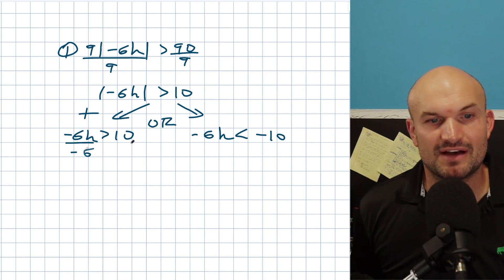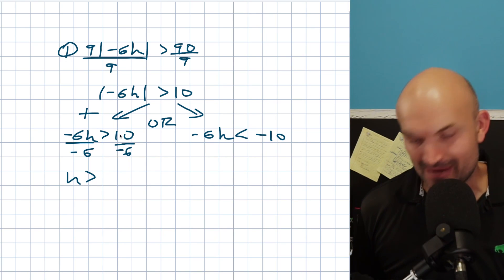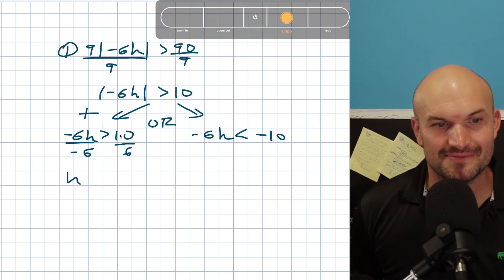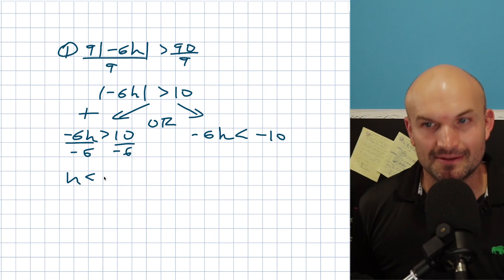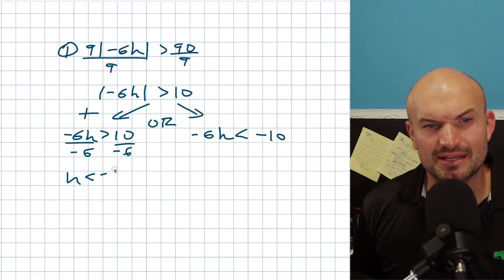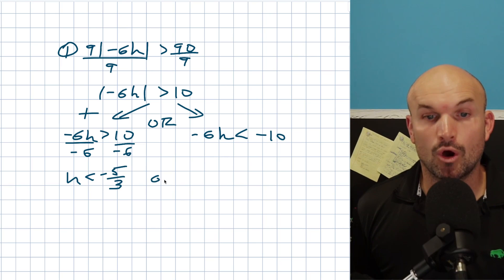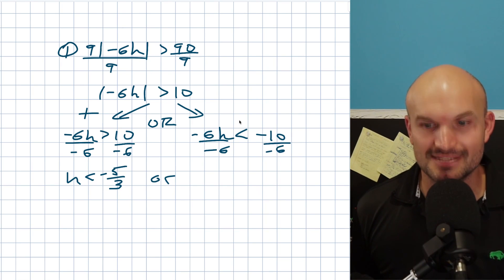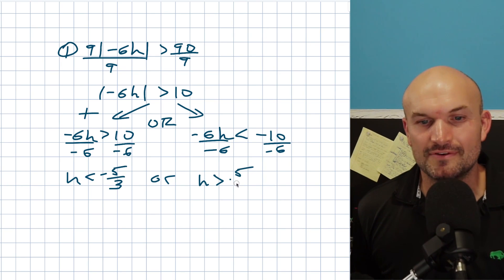Now we're simply going to divide by negative six on both sides. What happens when you divide by a negative — you have to flip the sign. So be very careful with that. Therefore H is going to be less than negative 10 over 6. That reduces down to H is going to be less than negative five thirds. Or, dividing by negative six again on both sides, H is going to be greater than positive five thirds.